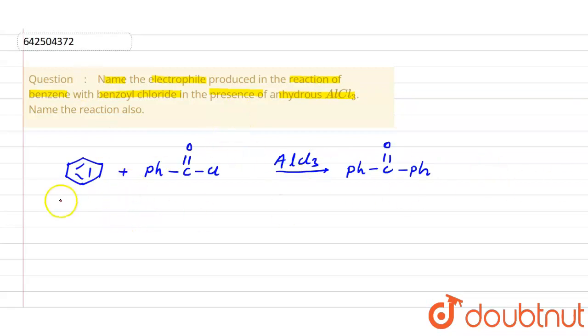And which electrophile will be formed, we can discuss here by the mechanism of this reaction. So let me discuss that. So what will happen? First of all, this benzoyl chloride will react with anhydrous AlCl3.